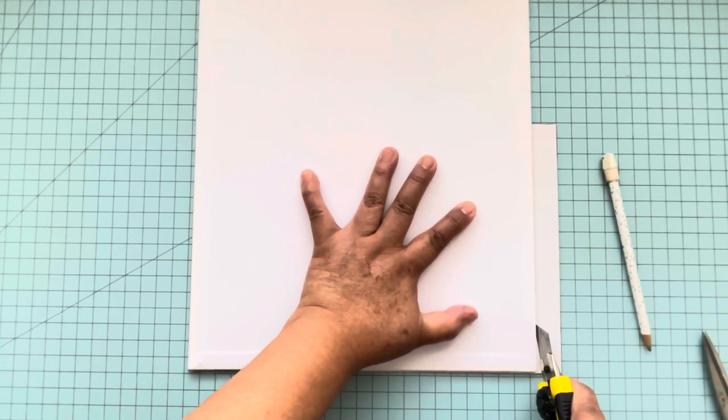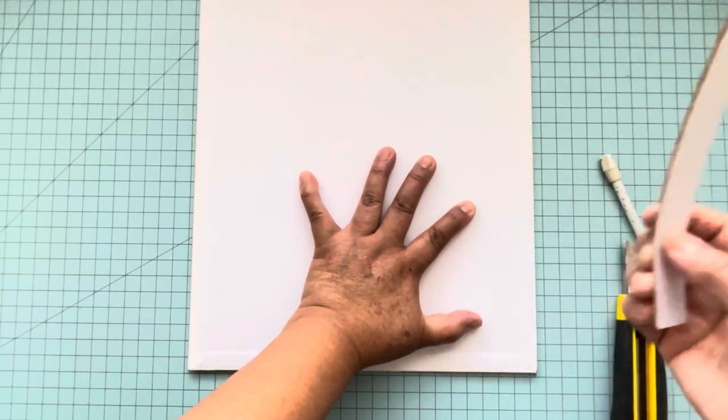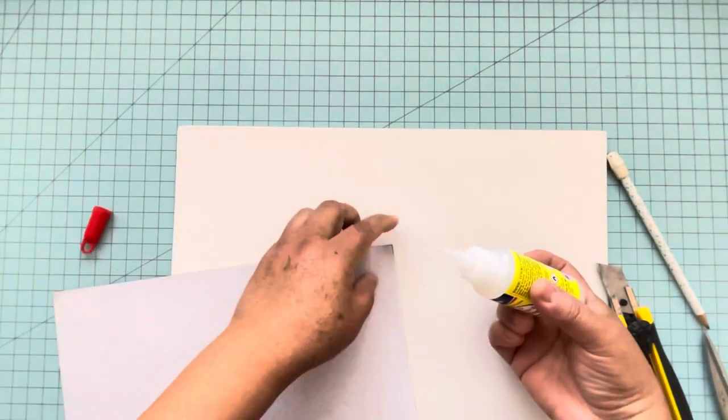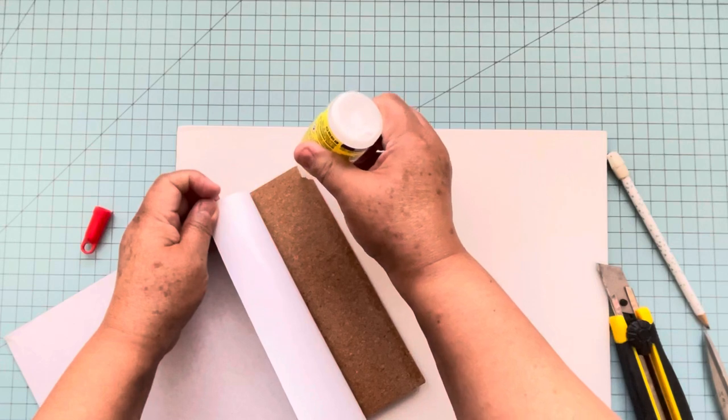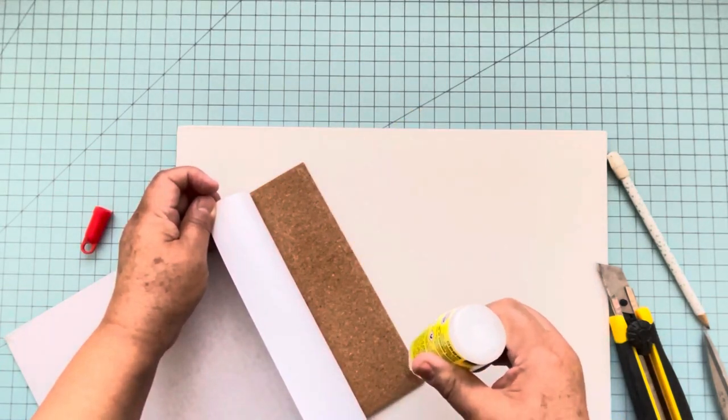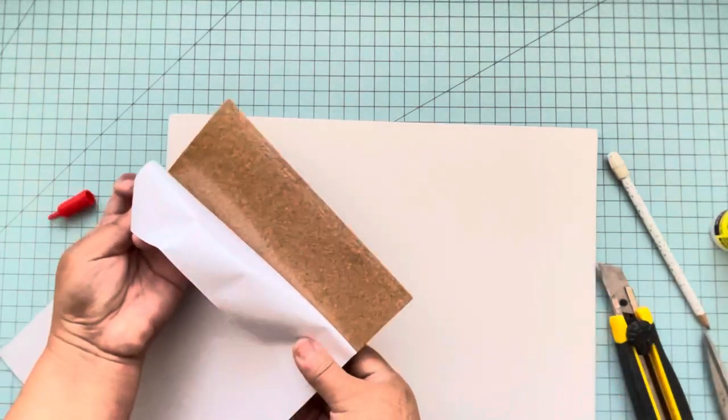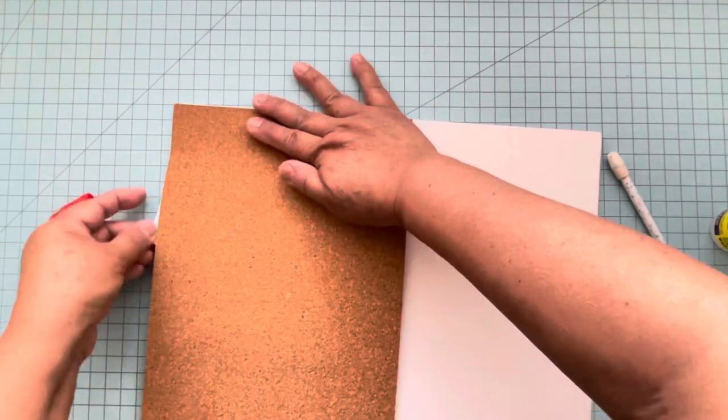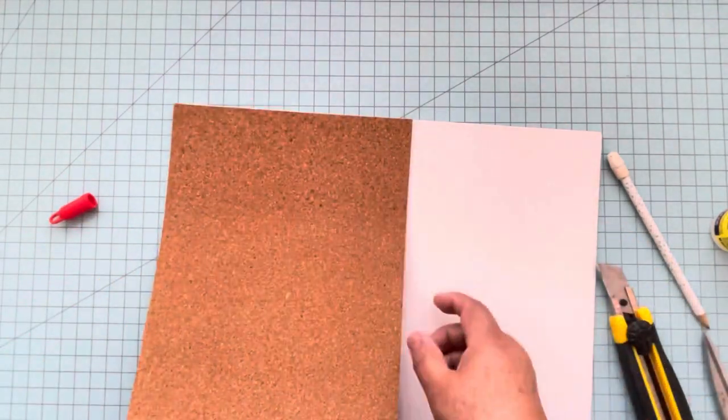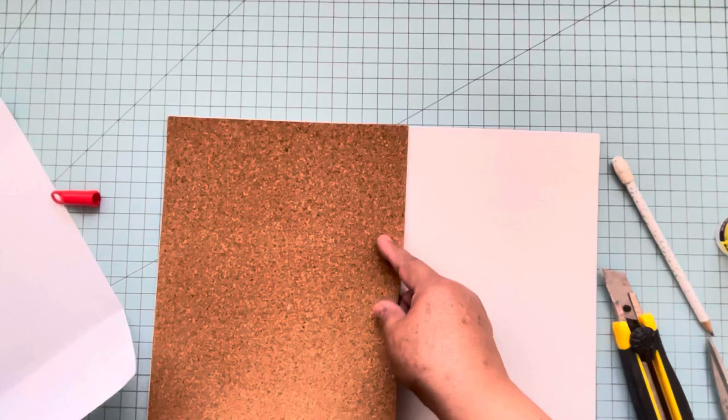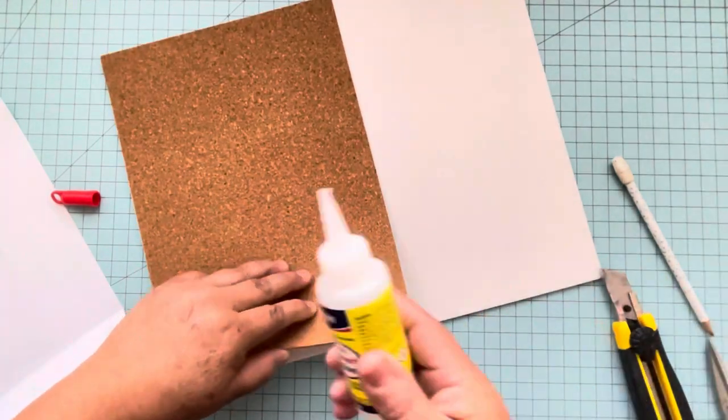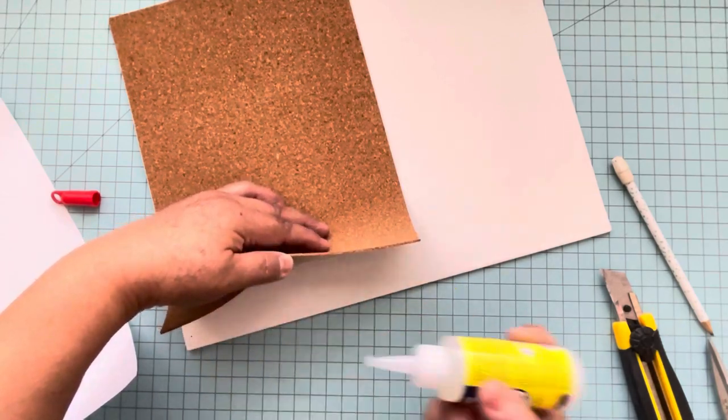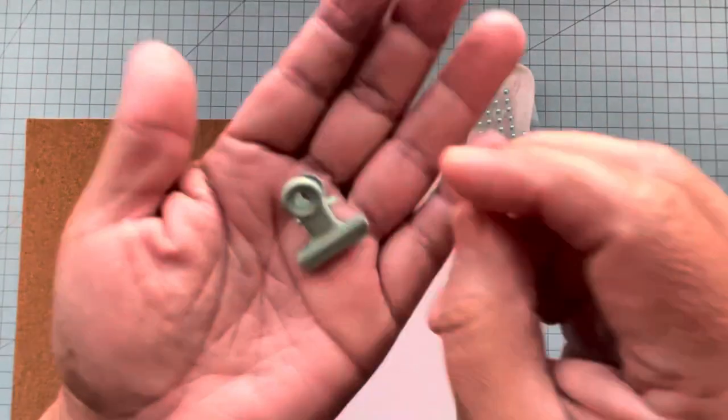After I'm done cutting, I'm ready to adhere the cork on the canvas. Before that, I'm going to use this glue from Dollar Tree to secure the top and bottom of the cork so it doesn't peel later. When you position the cork, it's very important that you press and then start pulling the backing. At the bottom, don't forget to add glue. Now my board is almost ready.